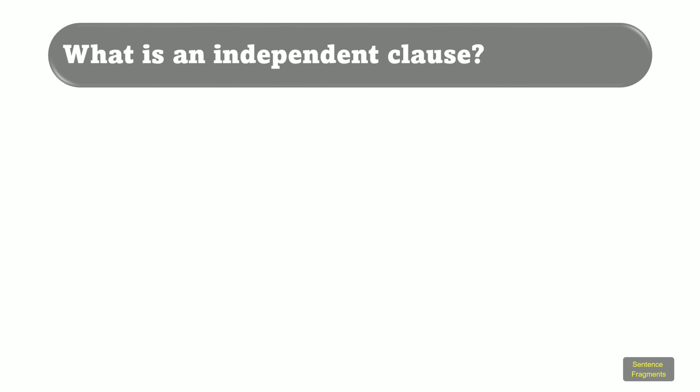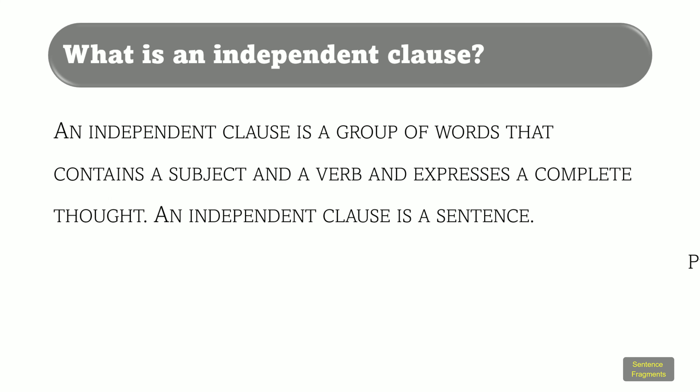What is an independent clause? You just learned that a sentence must contain an independent clause, and you may now wonder what an independent clause is. An independent clause is a group of words that contains a subject and a verb and expresses a complete thought. An independent clause is a sentence.